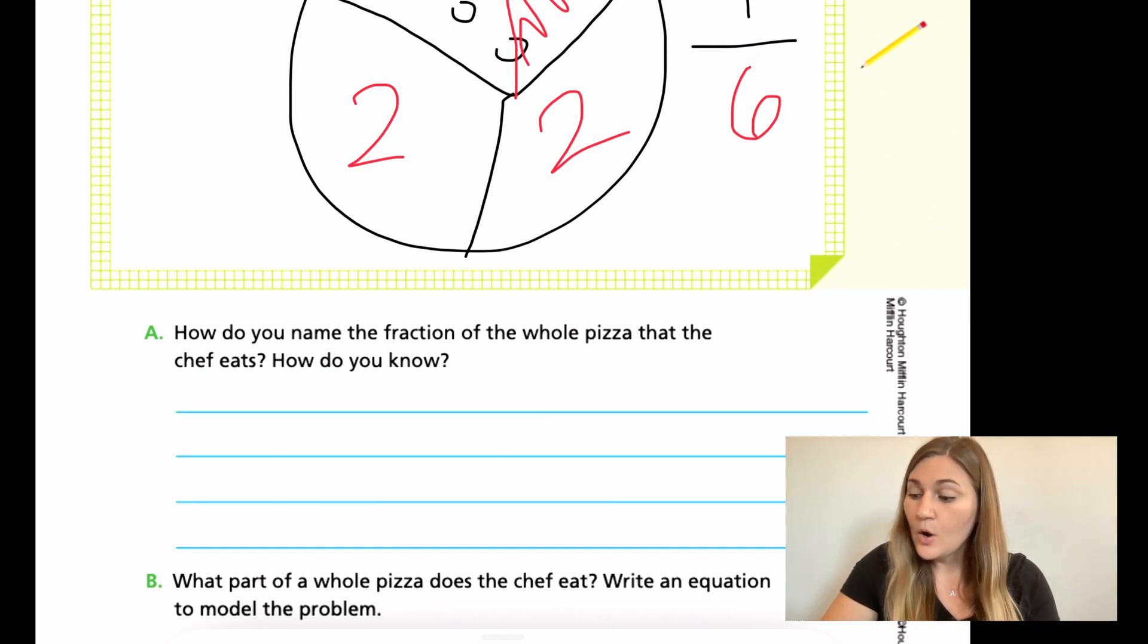And then for B, what part of a whole pizza does the chef eat? Write an equation to model the problem. So I know that I have one third pizza and then I'm taking a half. And this is where fractions get a little bit complicated. So I want to just stop and talk about this real quick.